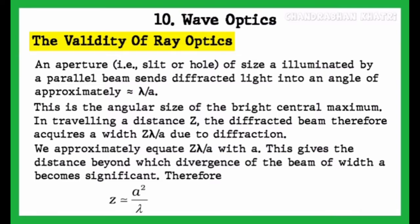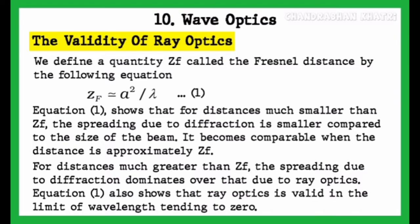We define a quantity Zf called the Fresnel distance by the following equation: Zf ≈ a²/λ. Equation (1) shows that for distances much smaller than Zf, the spreading due to diffraction is smaller compared to the size of the beam.